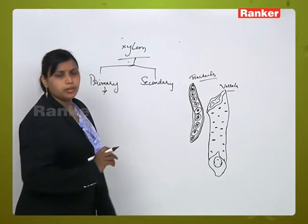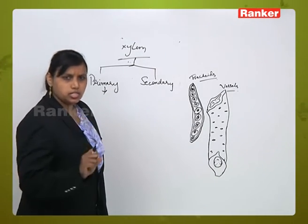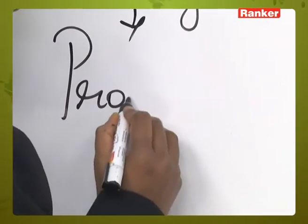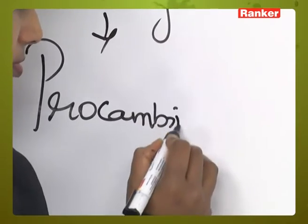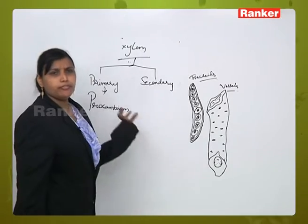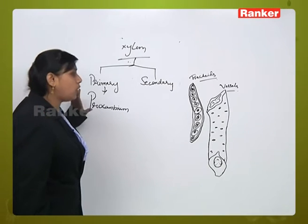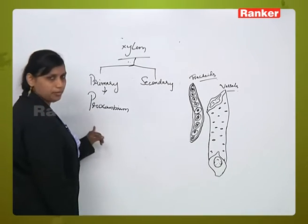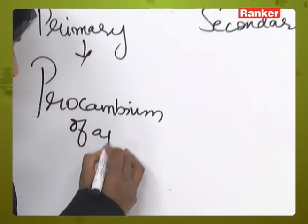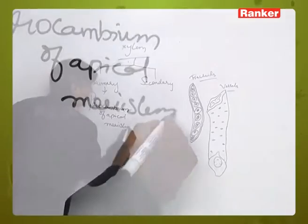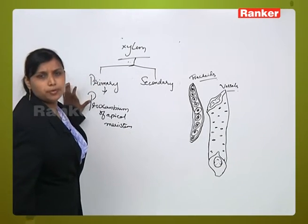Where do we get the primary xylem from? The origin of primary xylem is occurring from the procambium of the meristematic cells. If the growth or initiation of the xylem tissue occurs from the procambium of the apical meristem, then this type of xylem is called primary xylem.